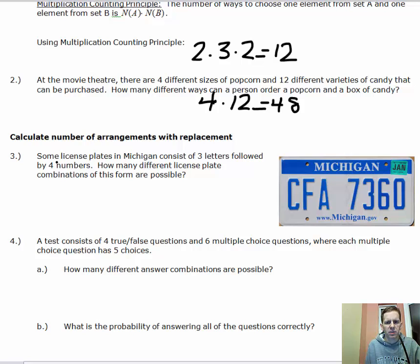As we look at example three, it says some license plates in Michigan consist of three letters followed by four numbers like you see in the picture. How many different license plate combinations of this form are possible? Similar to what we just did, you want to think of the different positions that are possible here. We have three letters followed by four numbers. And the number of letters that are possible are 26. There's 26 letters of the alphabet.